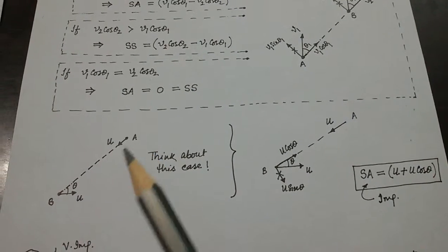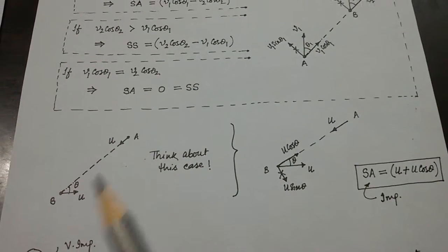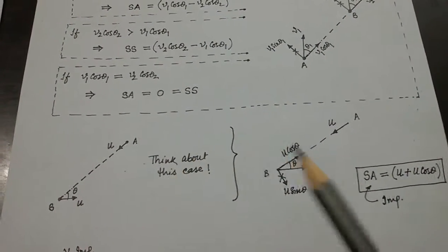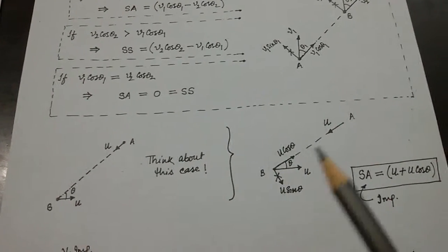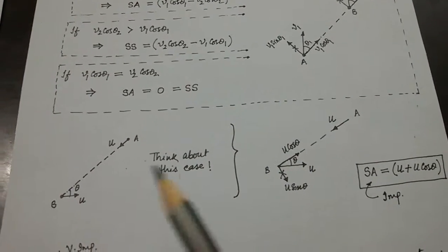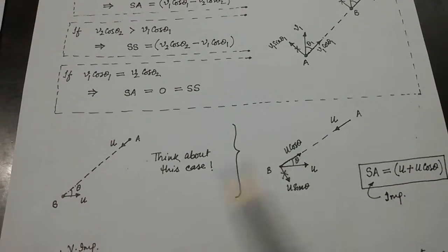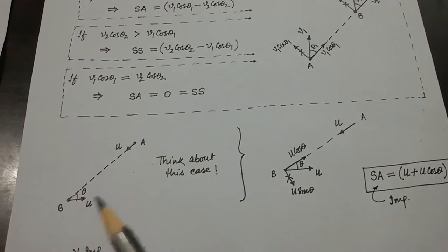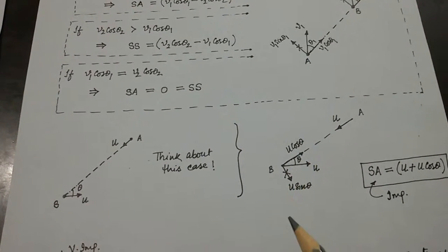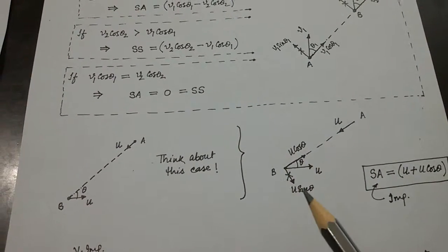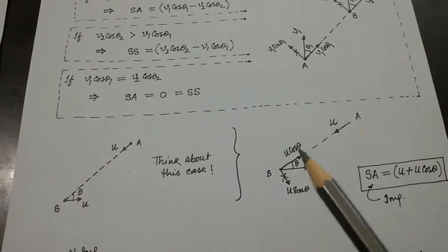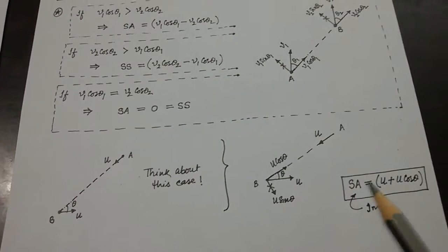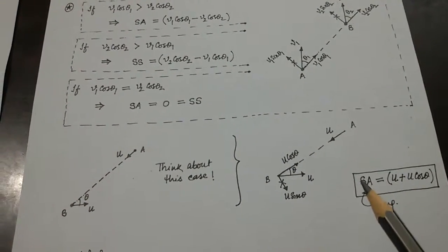Particle A and Particle B — you are getting this figure. Let us make components of U: cos theta component and sin theta component. The sin theta component plays no role, so we keep the cos component. Both U and U cos theta contribute, giving speed of approach equal to U plus U cos theta.